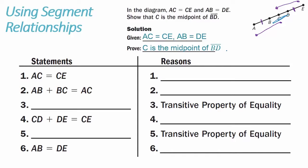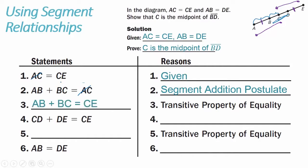We start by writing our given: AC equals CE. Using the segment addition postulate, AB plus BC gives the entire length of AC. Since AC appears in both steps one and two, we can get rid of AC and say that AB plus BC equals CE, using the transitive property of equality. Similarly, using the segment addition postulate, CD plus DE equals CE.